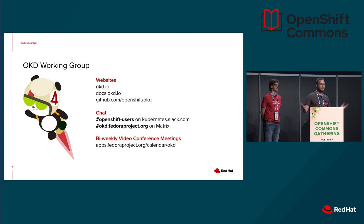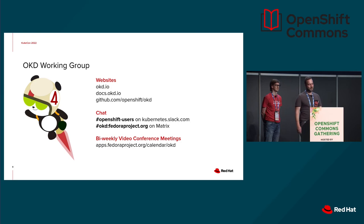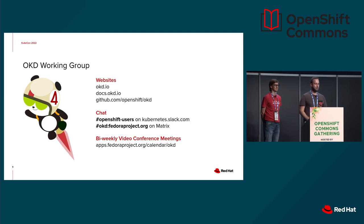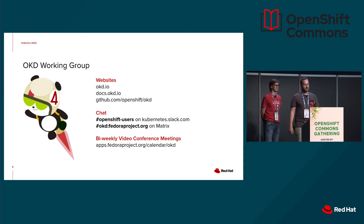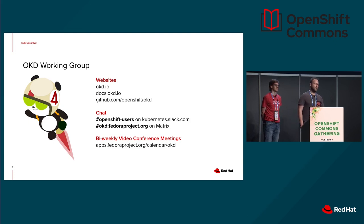If you're interested in working or collaborating with us, or just getting to know the developers behind OKD or the wider community, we have the OKD working group and everybody's invited to join. Check out OKD.io for the main website. Our docs are on docs.okd.io. We also have an issue tracker on GitHub, which is the OpenShift OKD repository. For chat, we're in the OpenShift users channel on the Kubernetes Slack, and there's also a Matrix channel on the Fedora project instance, which is the OKD channel. We have a calendar you can subscribe to with biweekly OKD working group meetings and biweekly docs meetings.